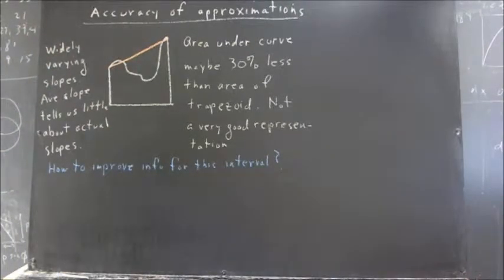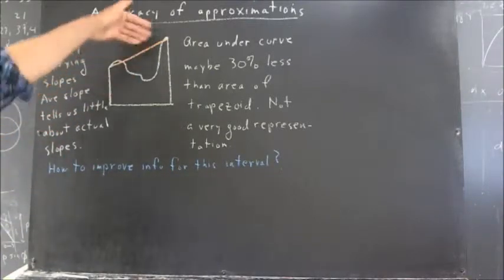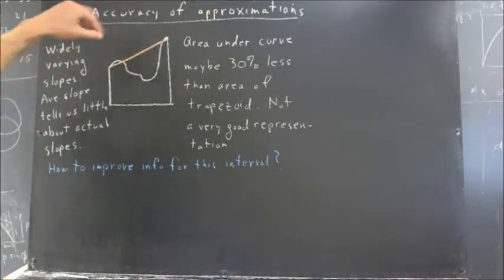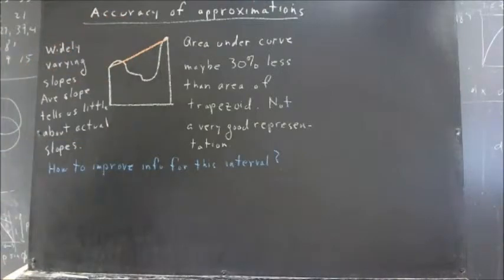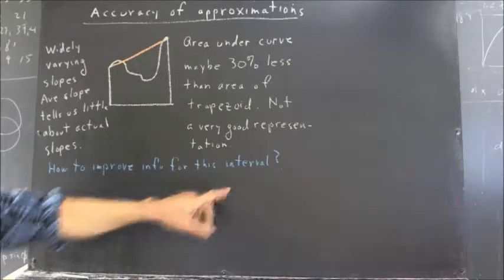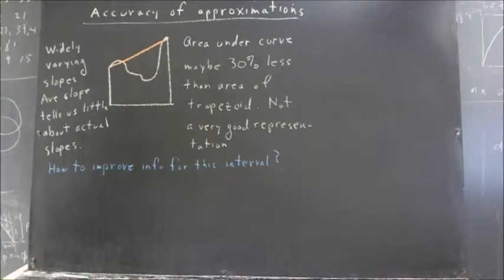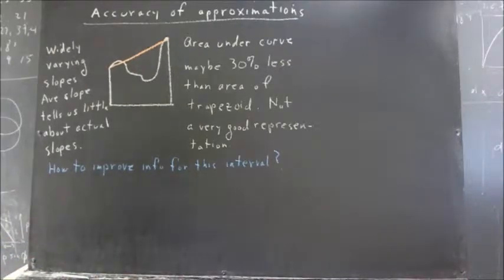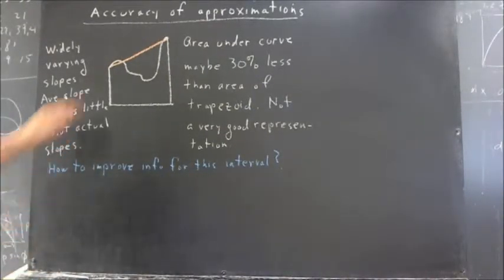So my question is, if we know how to evaluate whatever this function is, we know how to find a y value for every possible x value, how can we improve our information for this interval? How can we get more detailed information to allow us to better represent what actually is going on on this interval, with respect at least to what the graph can tell us? Well, the obvious solution might be to divide the graph into smaller intervals.